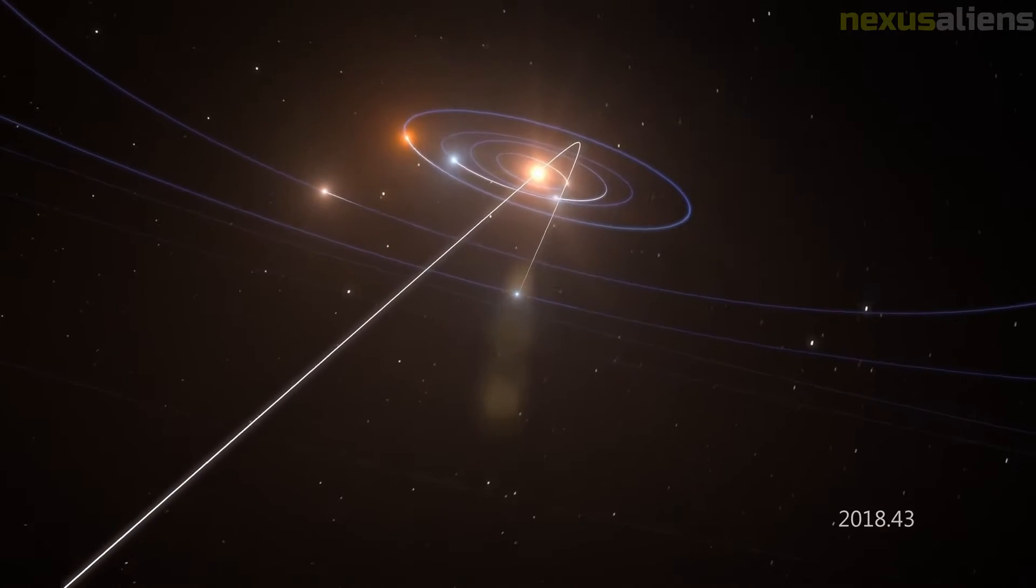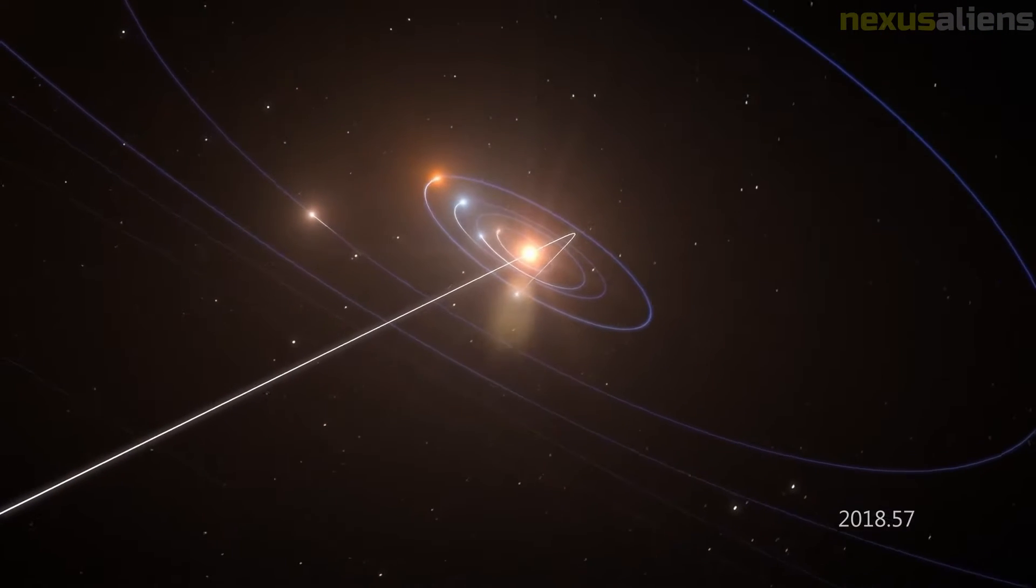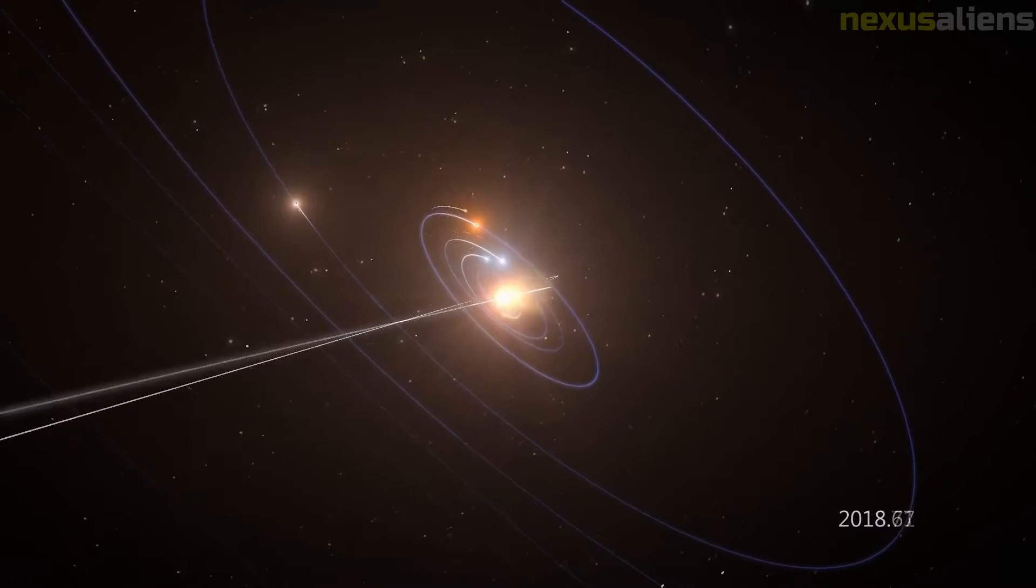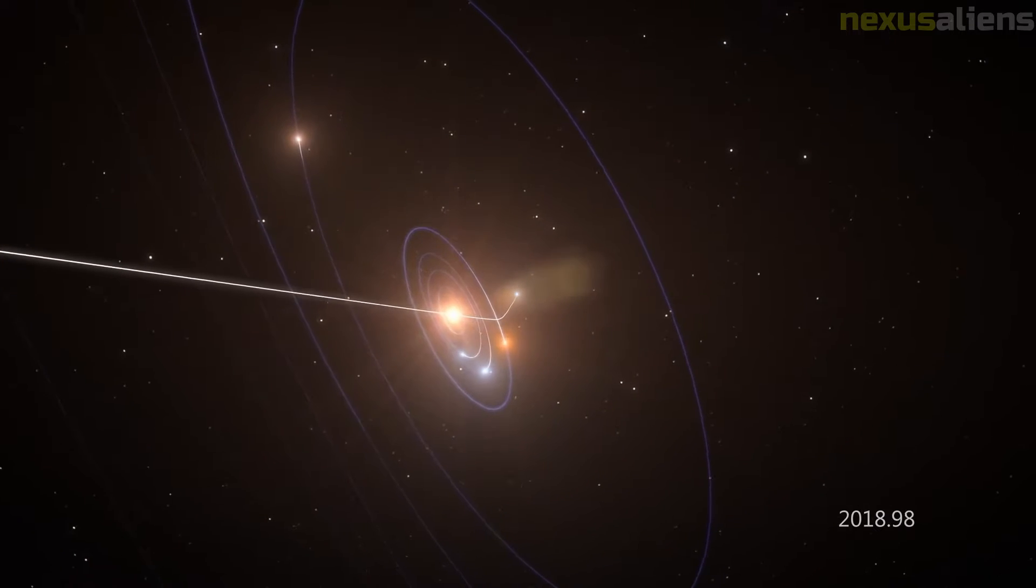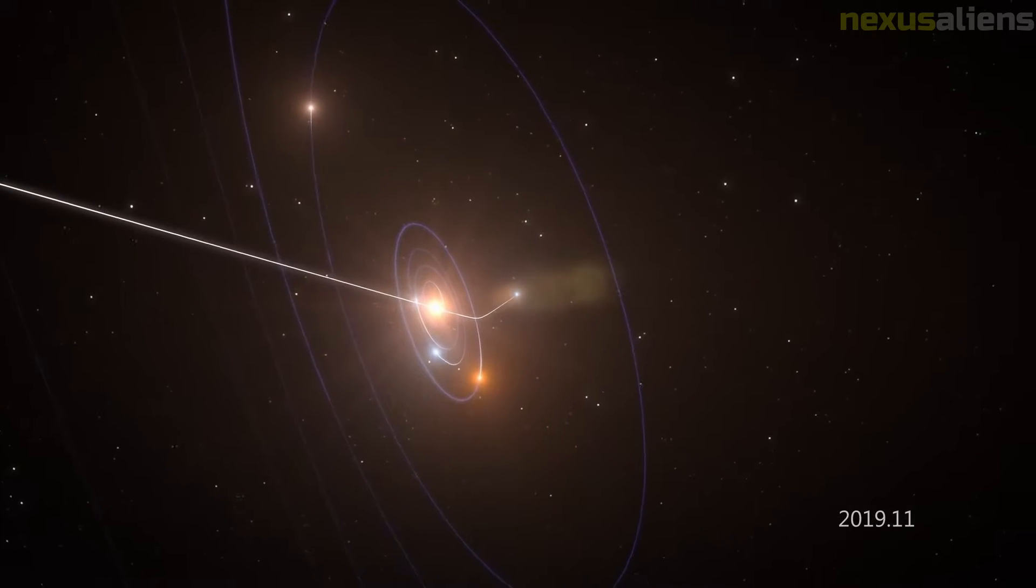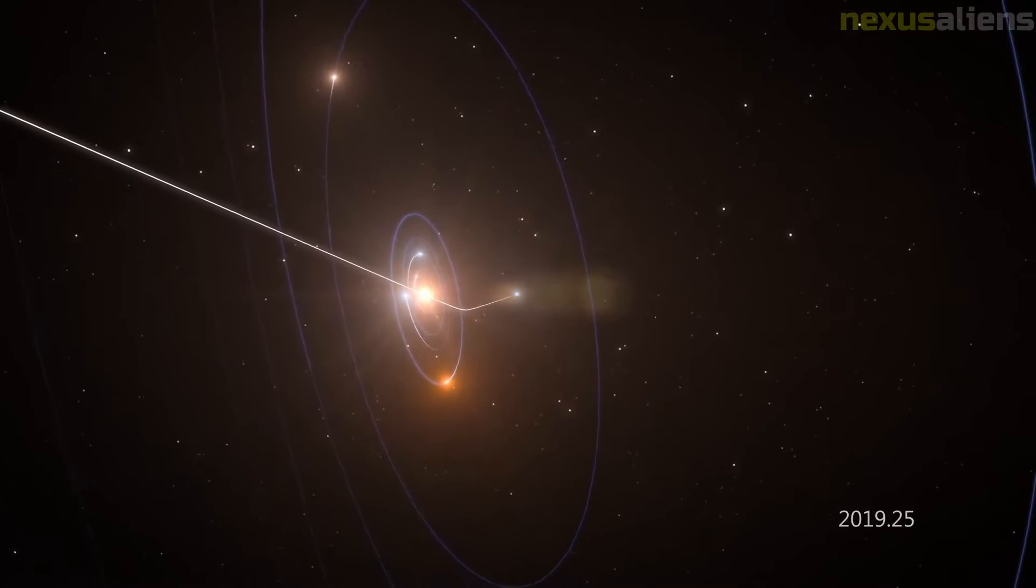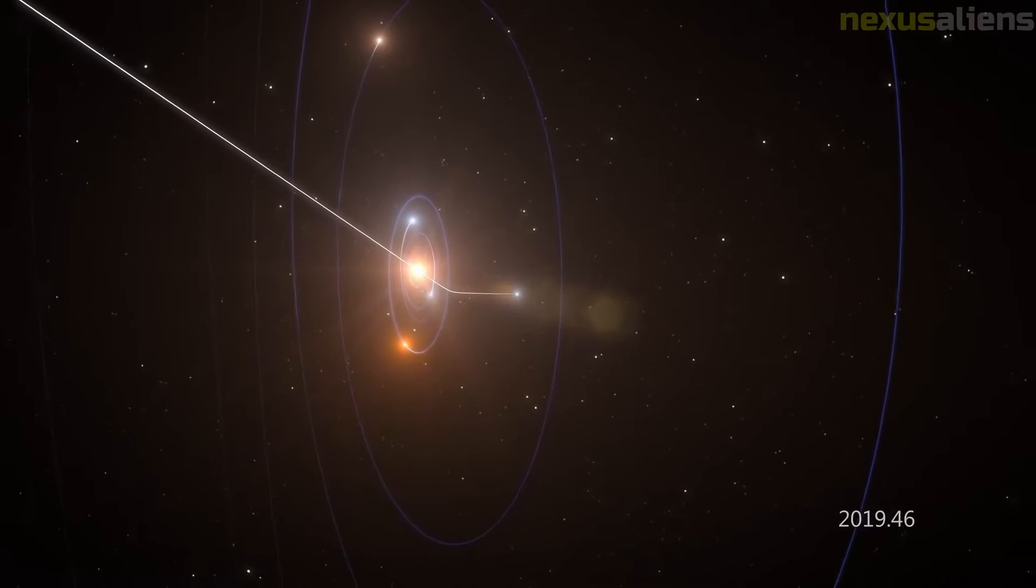This velocity profile also indicates an extrasolar origin, but appears to rule out the closest dozen stars. The closeness of Oumuamua's velocity to the local standard of rest might mean that it has circulated the Milky Way several times and thus may have originated from an entirely different part of the galaxy.